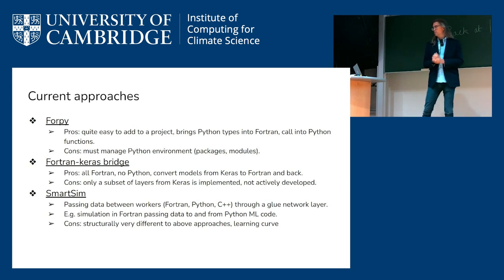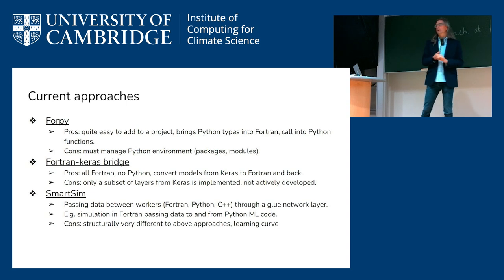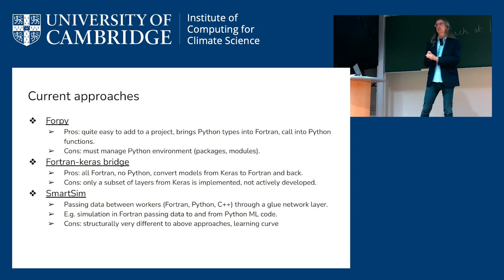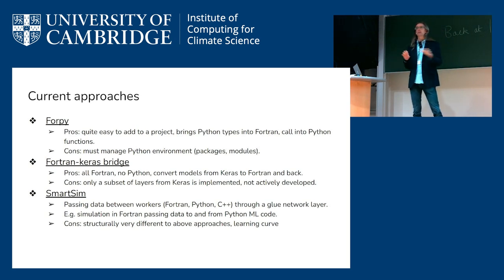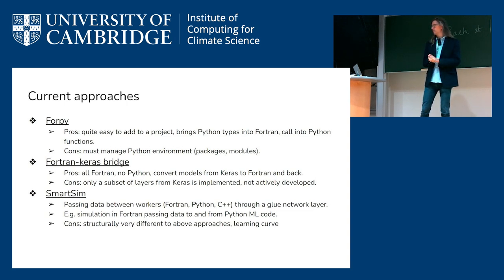There's also something called SmartSim, which is really about passing data between processes. For example, you might have a simulation running in Fortran and another part of your code running Python machine learning, as effectively separate processes. SmartSim handles passing the data between the two, effectively over a network or network-like connection. This seems quite different from the way a lot of people write an application to then call into a machine learning model, so we haven't given it a huge amount of attention.